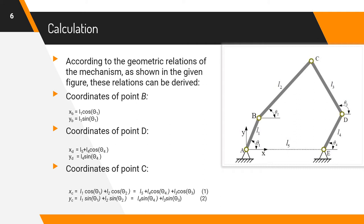According to the geometric relations of the mechanism, as shown in the given figure, these relations can be derived. For point B, xB equal to L1 cos theta 1, yB equal to L1 sin theta 1. For point D, xD equal to L5 plus L4 cos theta 4, yD equal to L4 sin theta 4. For point C, xC equal to L1 cos theta 1 plus L2 cos theta 2 equal to L5 plus L4 cos theta 4 plus L3 cos theta 3.